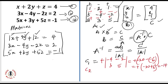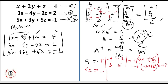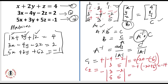For element 2 — C₁₂ — the sign is negative. The elements outside row 1 and column 2 are 3, minus 2, 5, and 5. So C₁₂ = minus [(3)(5) − (−2)(5)] = minus [15 + 10] = minus 25.